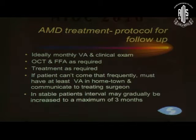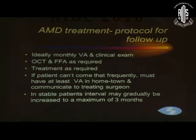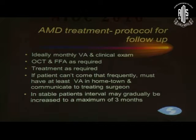Follow-up ideally involves monthly visual acuity and clinical examination, with OCT and FFA done as required, and treatment as required under PRN or treat-and-extend regimes. If the patient cannot come that frequently from out of station, we must have at least a visual acuity check in their hometown communicated to the treating surgeon. In stable patients, the interval may gradually be increased to a maximum of three months.